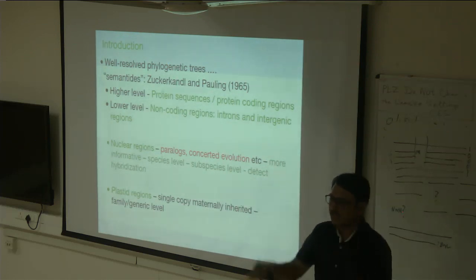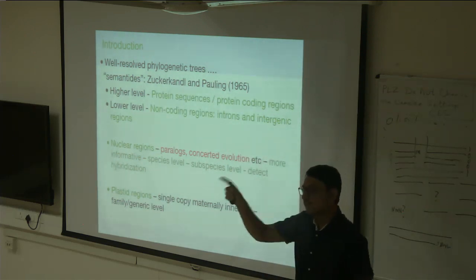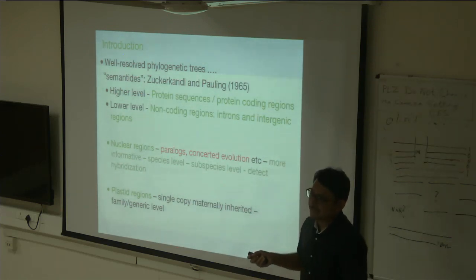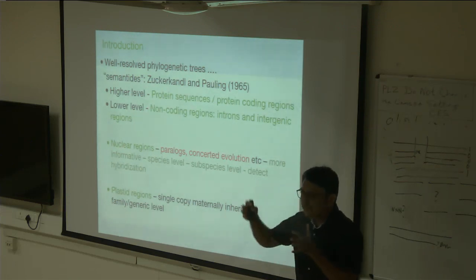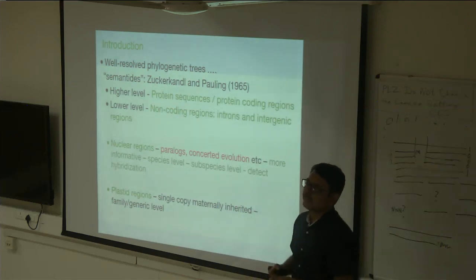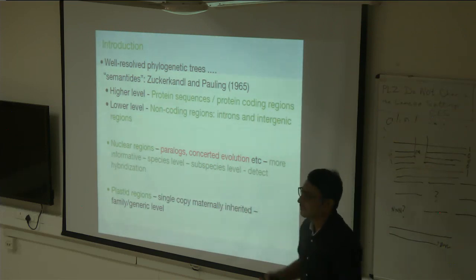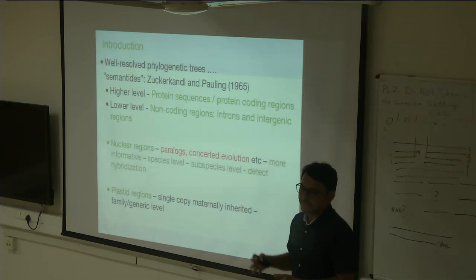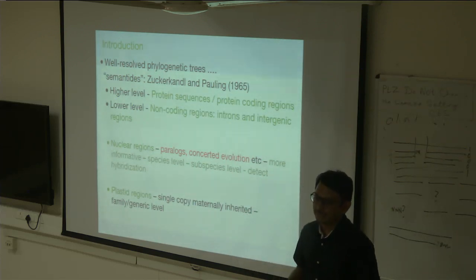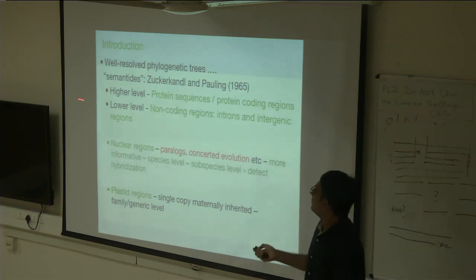A glucose molecule will have the same structure throughout all organisms, but a protein's sequence is going to change — changes accumulate in these semantide molecules. From that period, molecular phylogenetics came into existence. Interestingly, 1965 is the same year Moore's Law was given. The computer industry converged with this, and Margaret Dayhoff — considered the father of bioinformatics — published an atlas of protein sequences. Molecular phylogeny started from 1965.